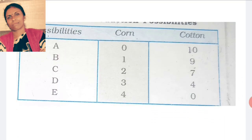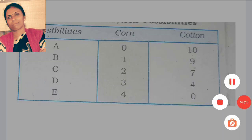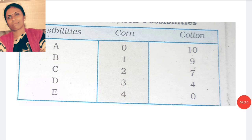In this example, in this table, three columns are there: possibilities, corn, and cotton — five combinations are there. If all the resources are fully employed on cotton, 10 units of cotton is produced and 0 of corn. If all the resources are employed on corn, only 4 units of corn is produced. For B: 1 of corn and 9 of cotton. C: 2 of corn and 7 of cotton. D: 3 of corn and 4 of cotton. E: 4 of corn and 0 of cotton. This example throws light on opportunity cost — if you want to produce more of one, then definitely we have to produce less of the other.